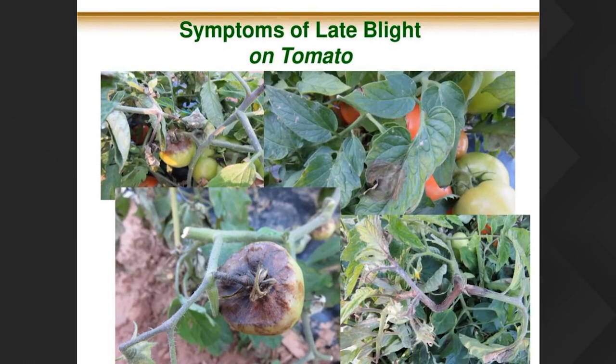Tomato is another crop that can be affected since it's closely related to potato. The symptoms look very similar — the same type of water-soaked leaf lesions and stem lesions. Tomato fruit tends to develop a reddish, granular, dry, sunken lesion when infected. You certainly get similar-looking symptoms on both crops.